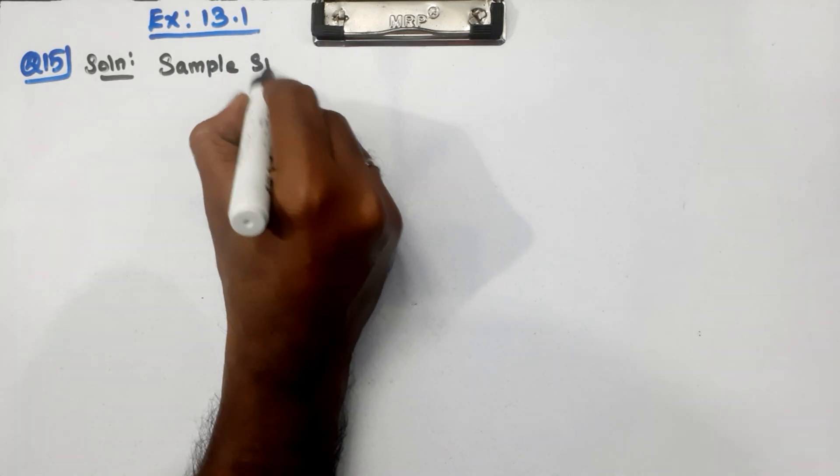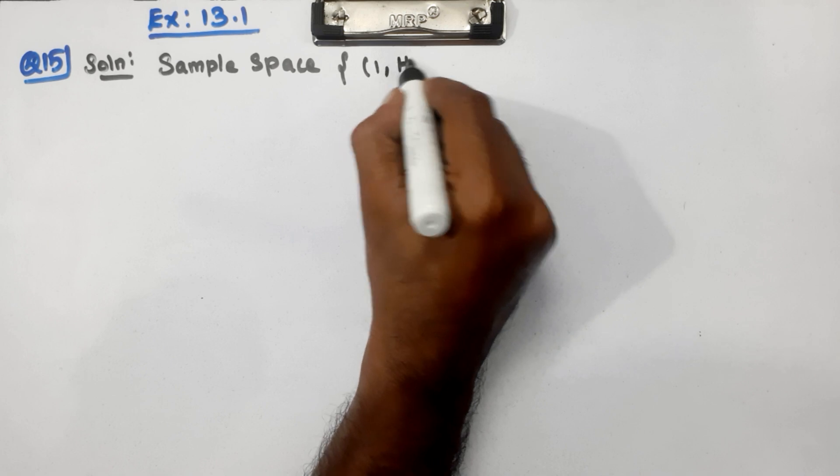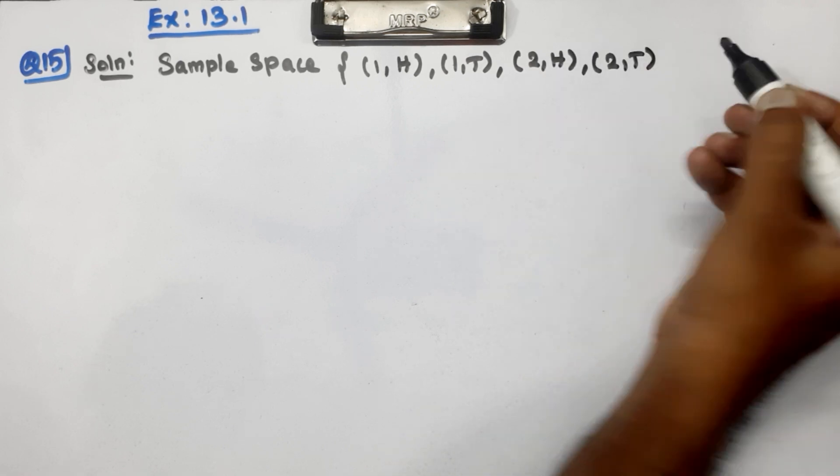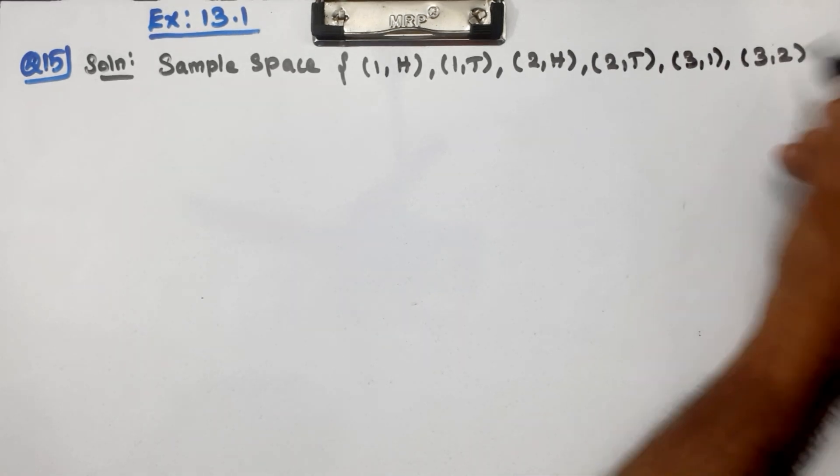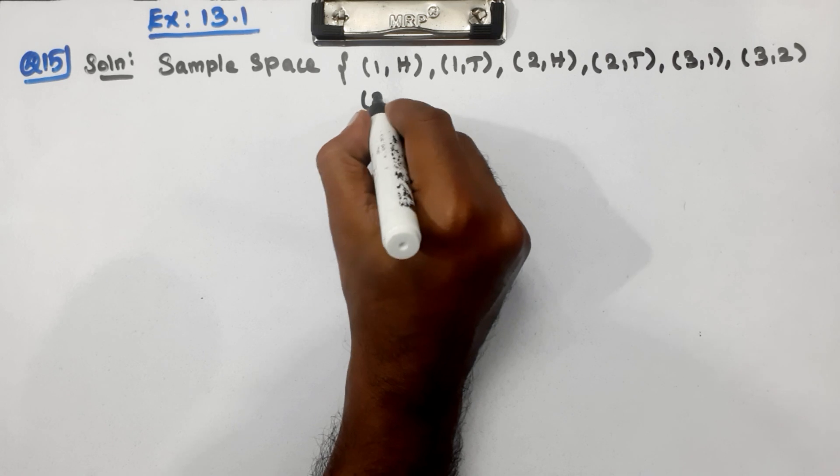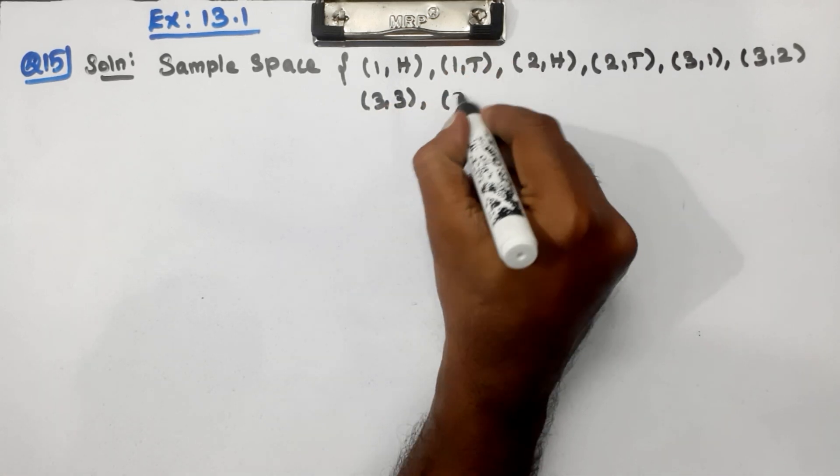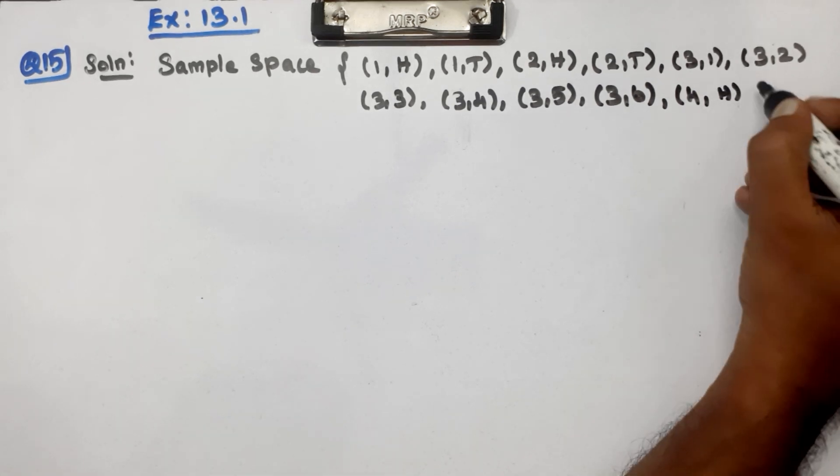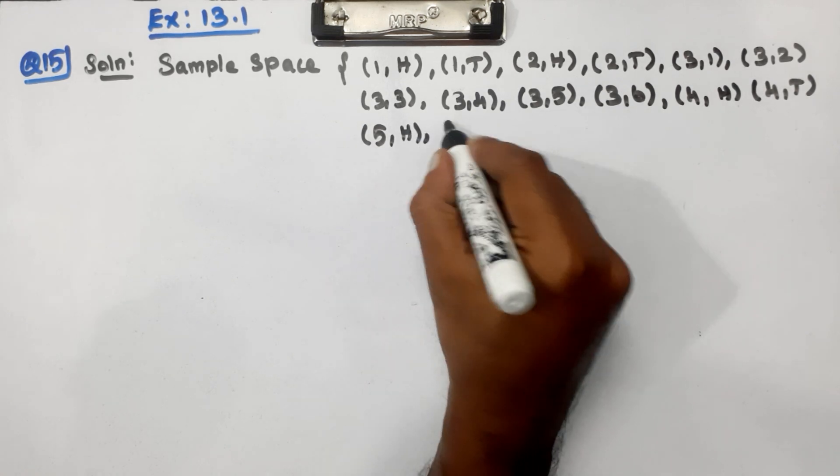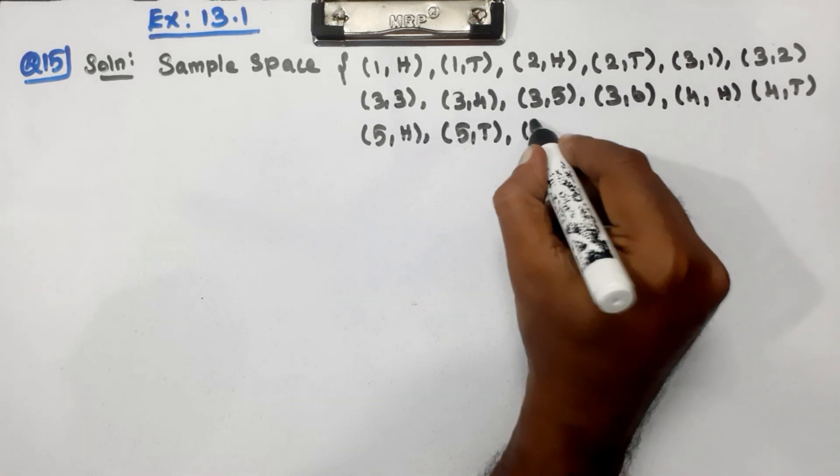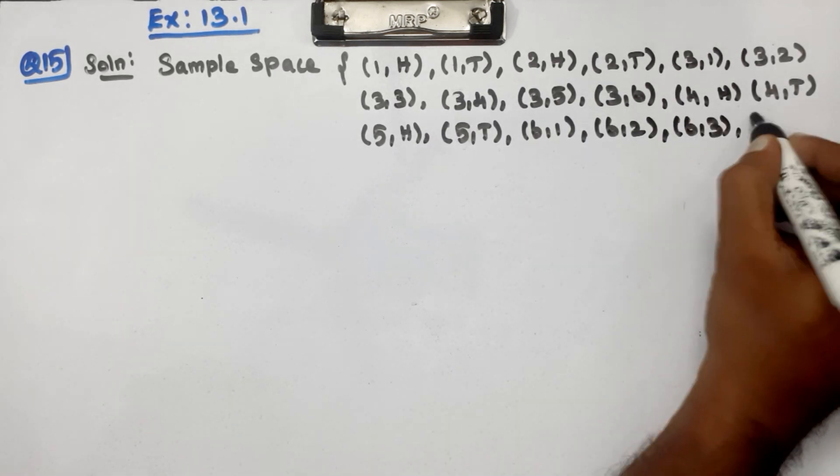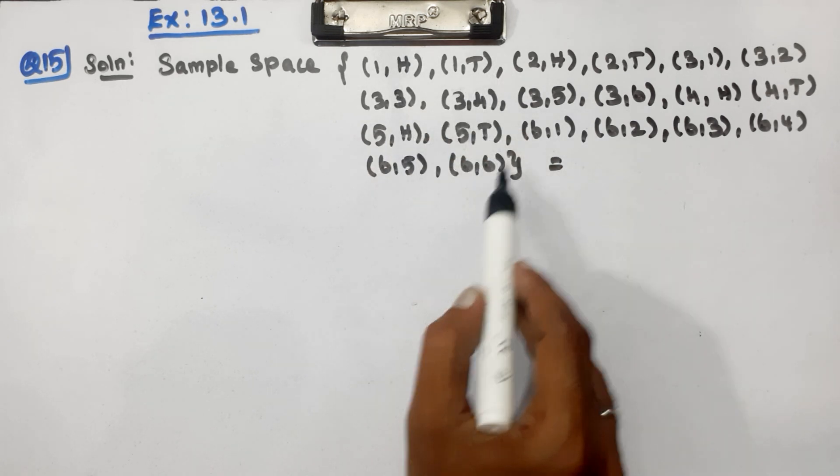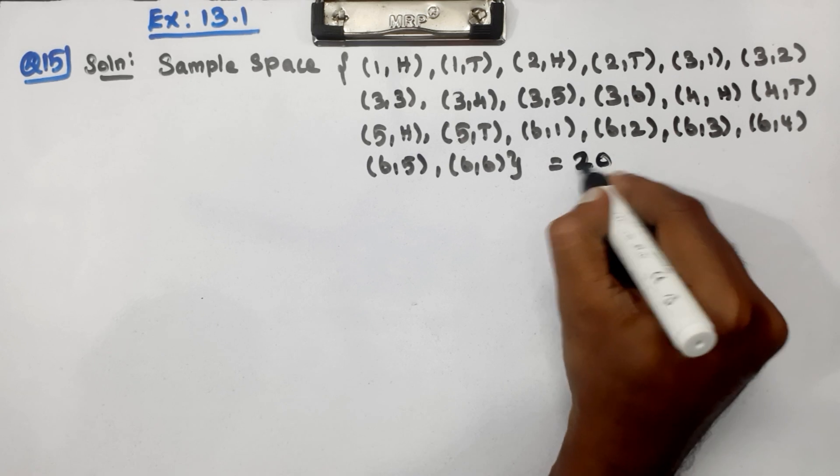Sample space: (1,H), (1,T), (2,H), (2,T) for 1 and 2. For 3: (3,1), (3,2), (3,3), (3,4), (3,5), (3,6). Then (4,H), (4,T), (5,H), (5,T). For 6: (6,1), (6,2), (6,3), (6,4), (6,5), (6,6). Total sample space is 20.